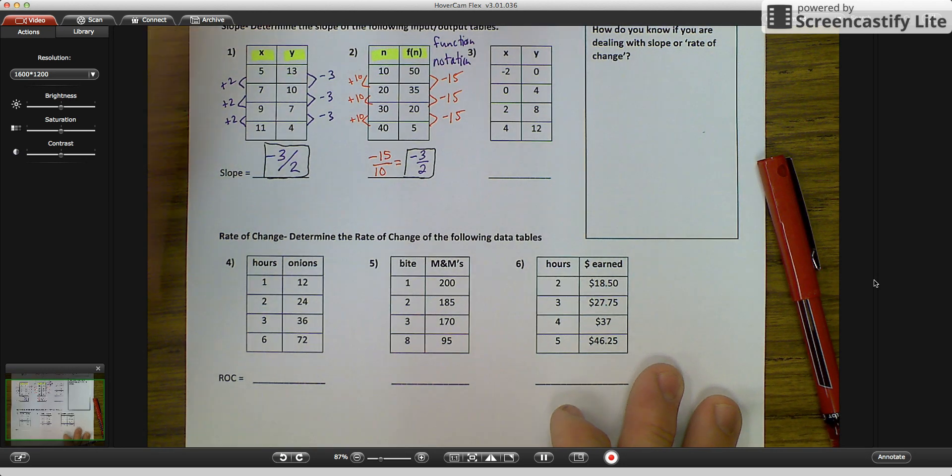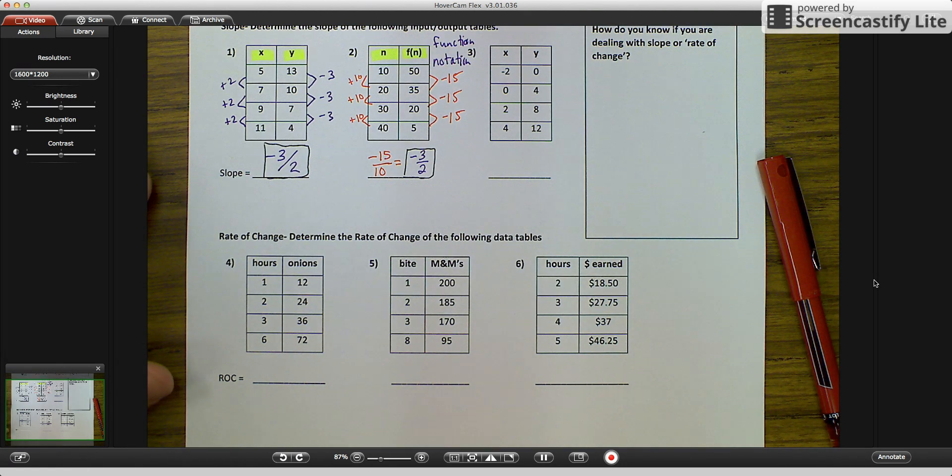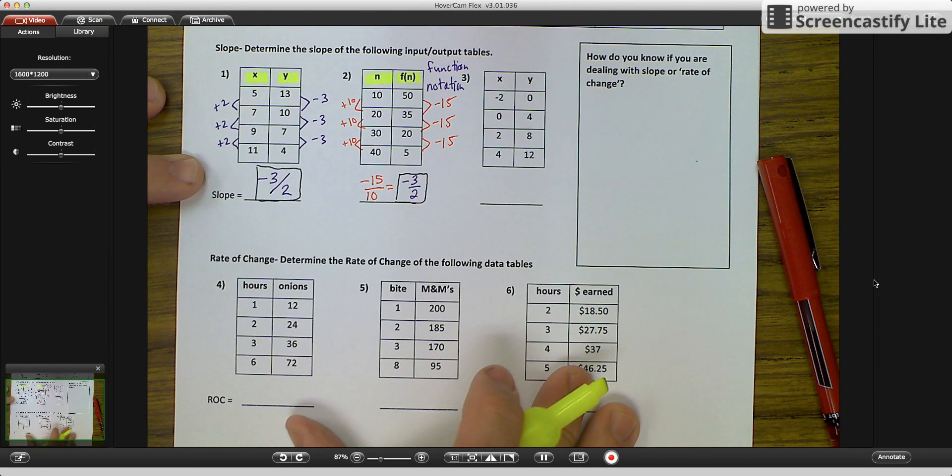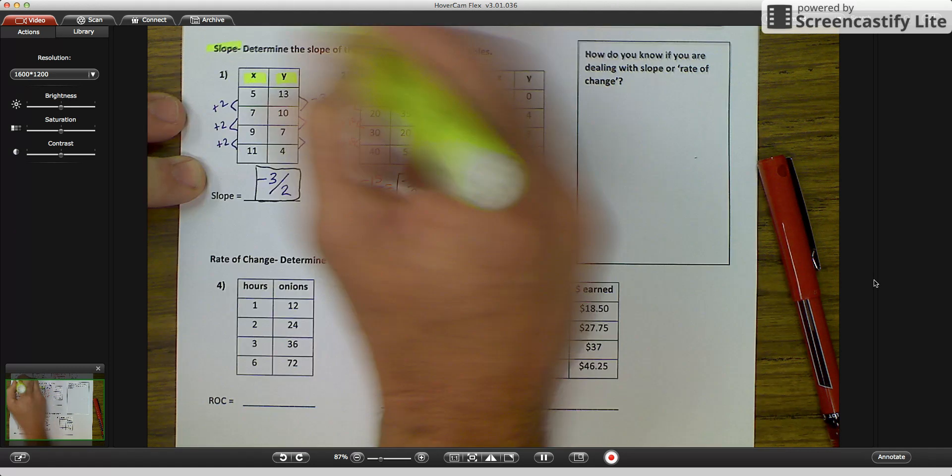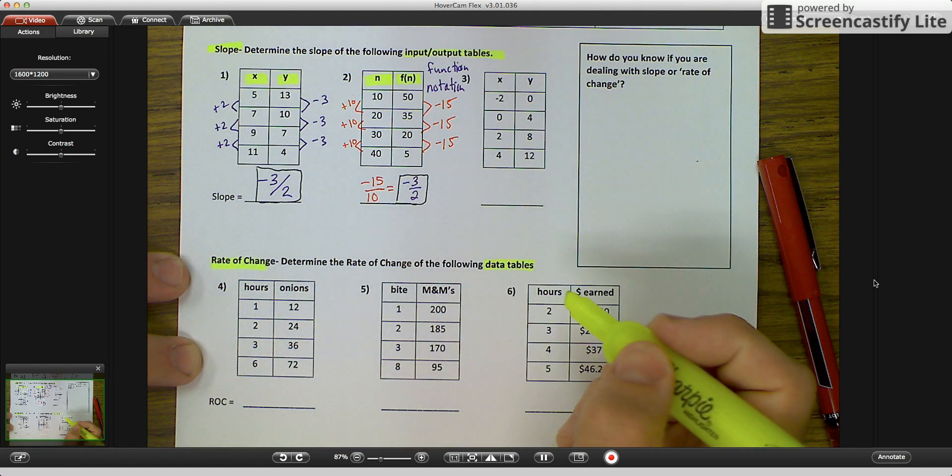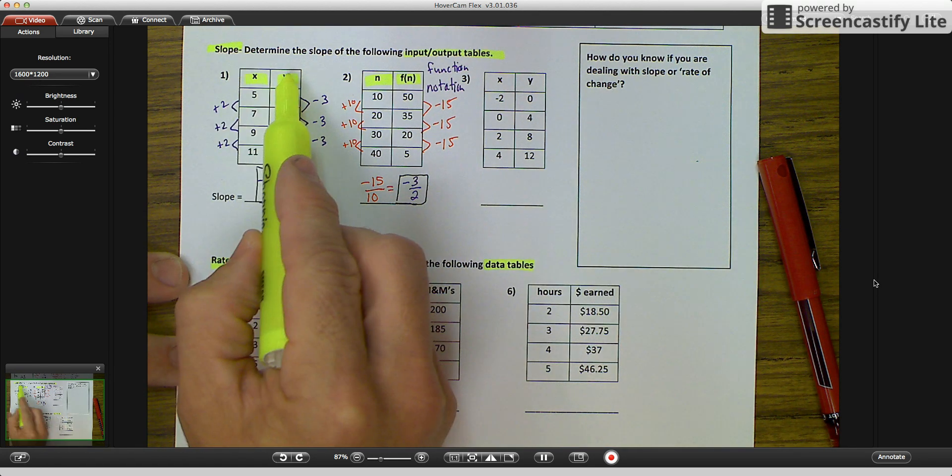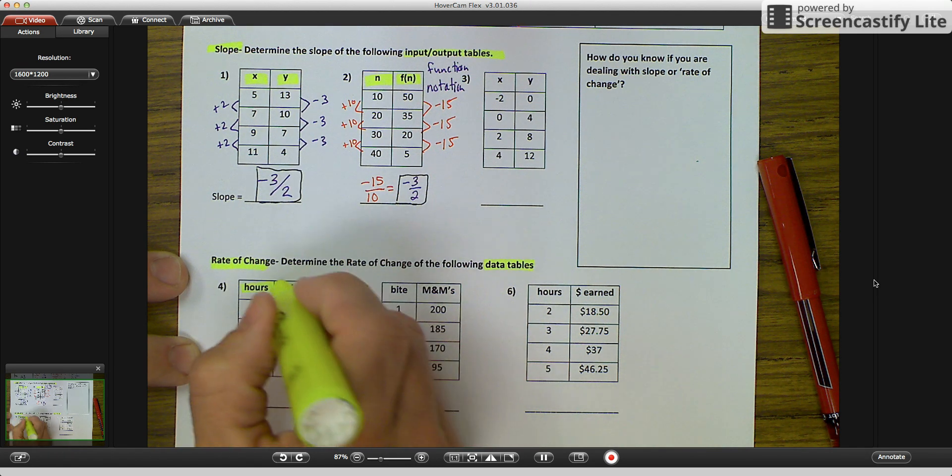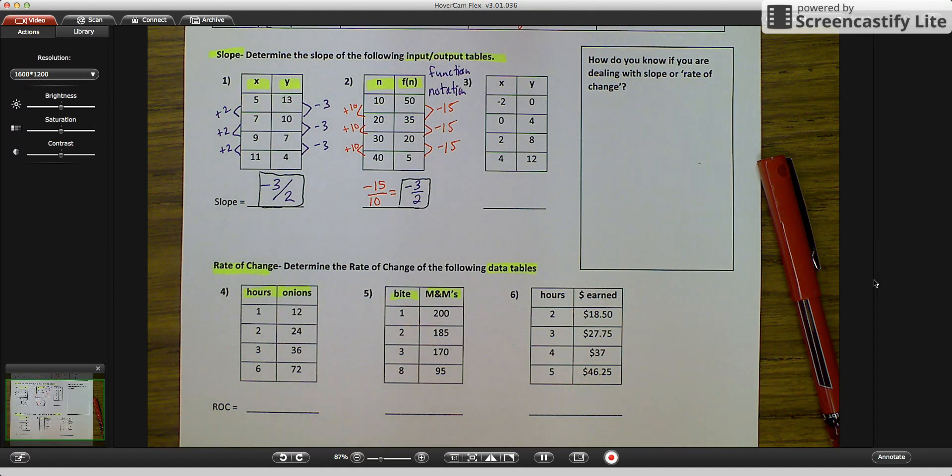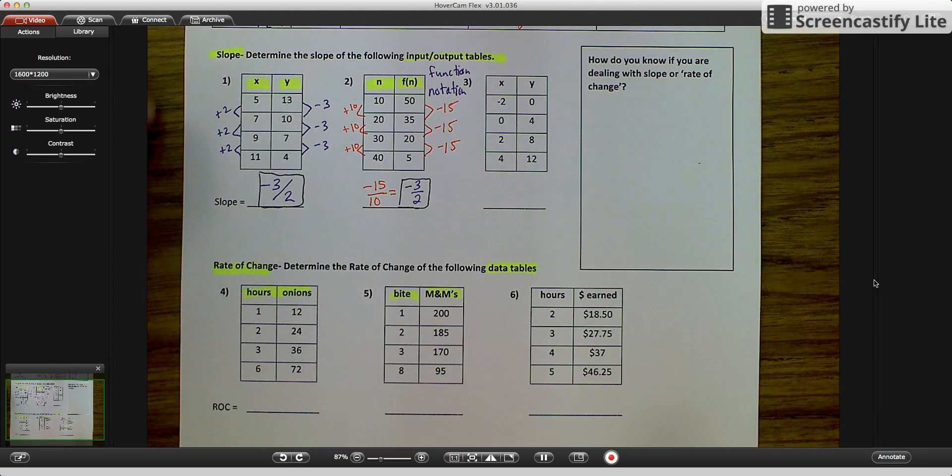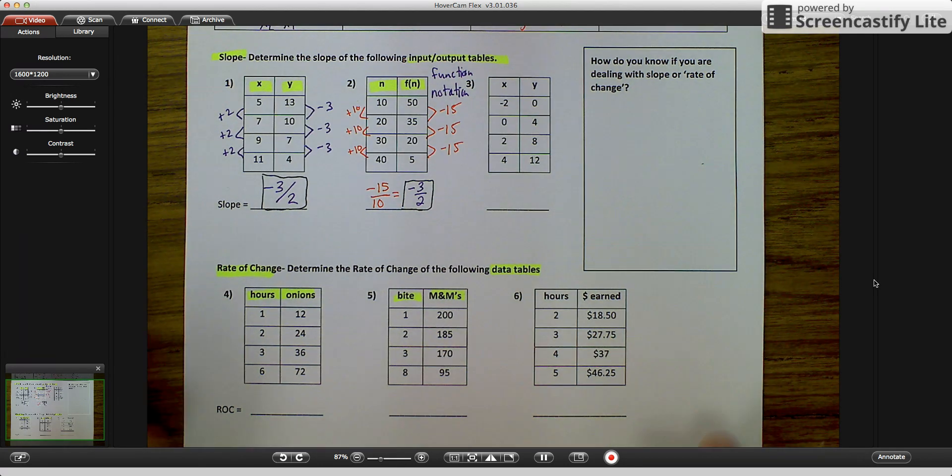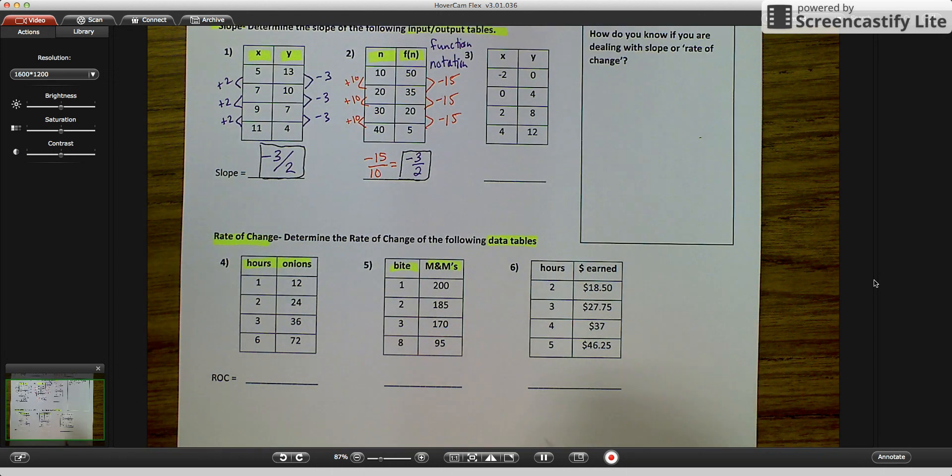And let's figure out the rate of change. Now the rate of change and the slope are the exact same, except for a couple of things. Slope deals with input-output tables. Rate of change deals with data tables. So input-output tables have an x and a y. The data tables have words that describe, so hours and onions, bites and m&ms. So that is how you know whether you are dealing with a slope or a rate of change. It's just the words that are used, but you do it the exact same way.